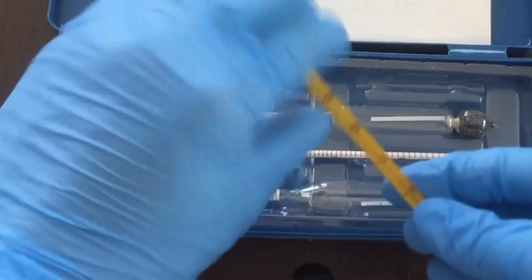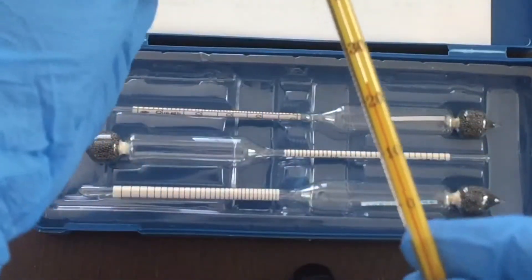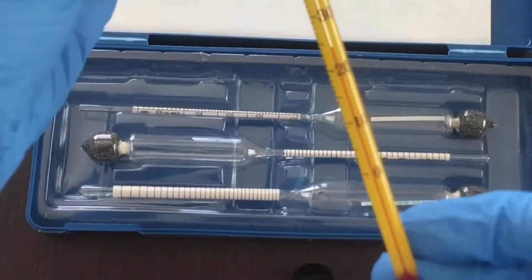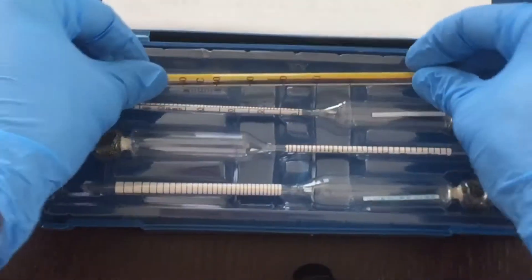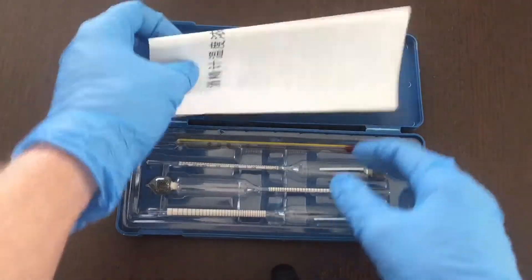It also comes with this mercury glass thermometer because the specific gravity, the concentration of the ethanol depends on the temperature.